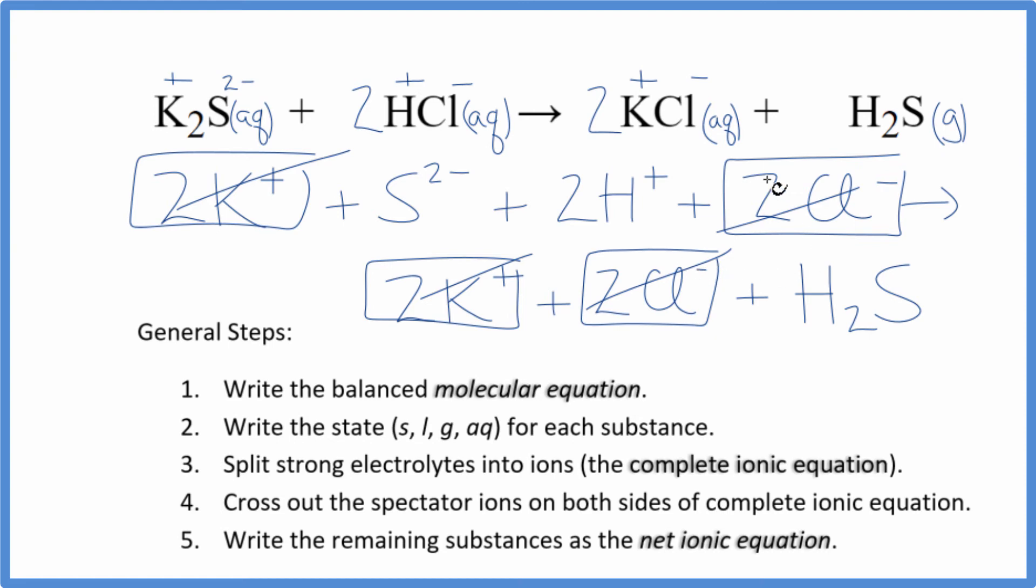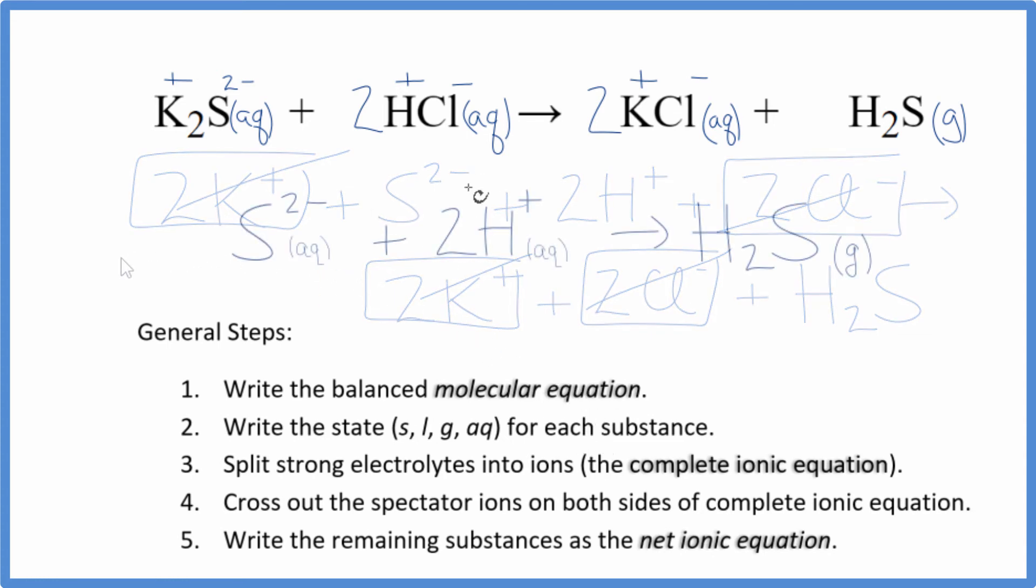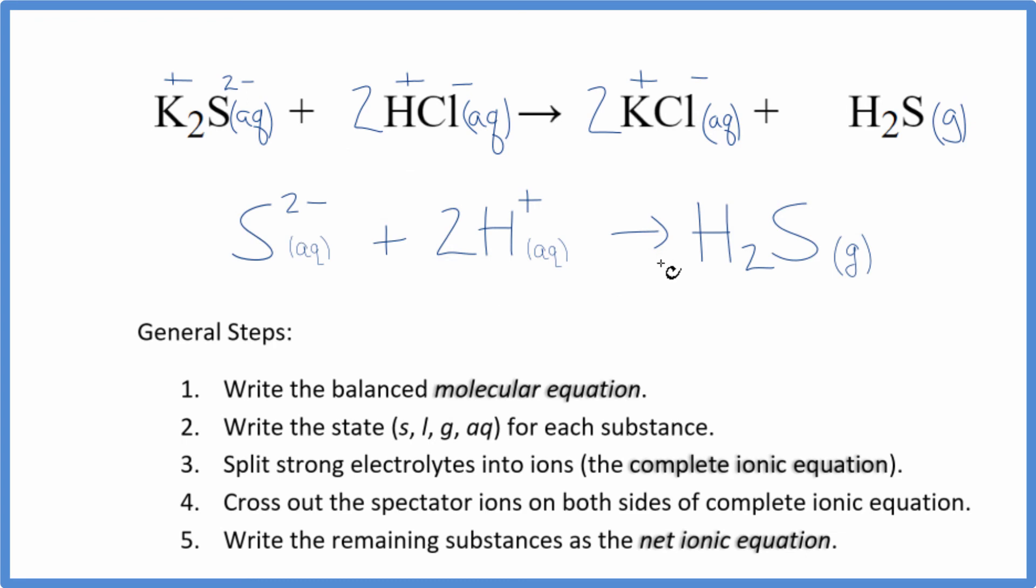And what's left, that's the net ionic equation for K2S plus HCl. Let me clean this up, write the states in. We'll have our net ionic equation. So this is the balanced net ionic equation for K2S plus HCl, potassium sulfide plus hydrochloric acid.